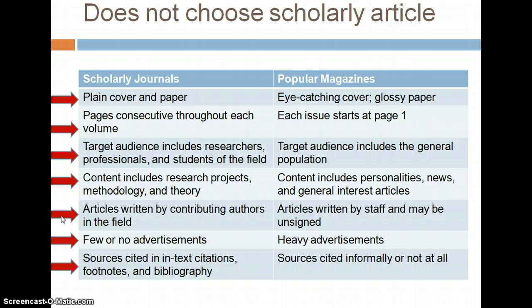A scholarly journal typically has a plain cover, and the pages are consecutive throughout each volume. A popular magazine, on the other hand, will typically have an eye-catching cover with glossy paper, and every issue starts at page one. For a scholarly journal, the target audience includes people in a specific field — for example, a psychology journal targets researchers, professionals, and students in psychology. A popular magazine like Psychology Today is written for the general population, so the words may be easier to understand and the coverage is less in-depth.